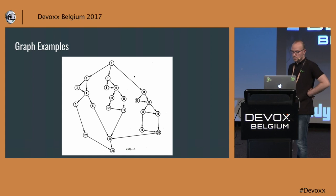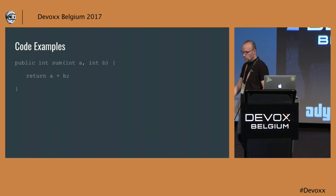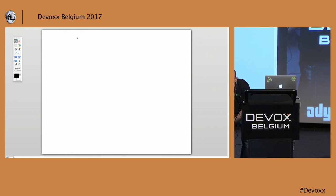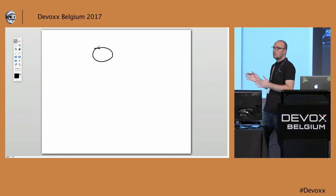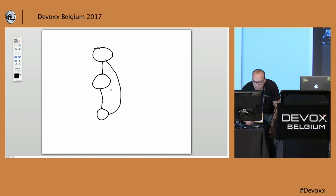Let's look at some code and try to calculate complexity. This first one is fairly simple. We have a start node, then one statement, and then the code finishes with an end. We connect the end node with the start node, and we have a complexity of one. Rocket science!